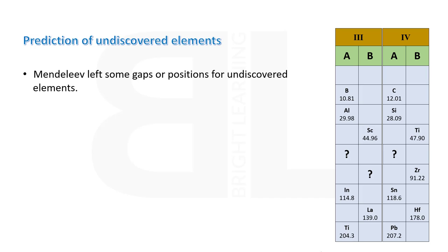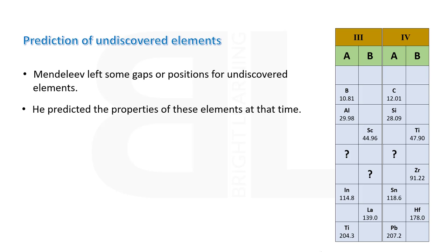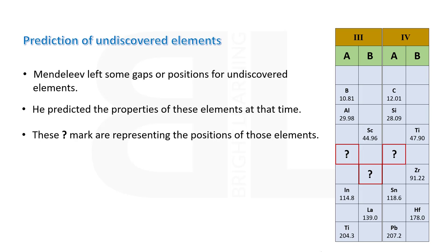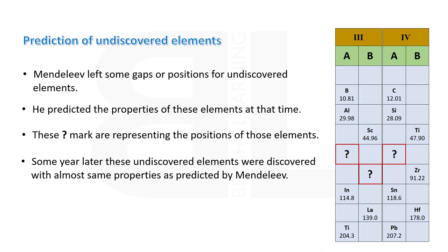Mendeleev left some gaps or positions for undiscovered elements in his periodic table and predicted their properties. These question marks represent the positions of elements which were not yet discovered. Some years later, these undiscovered elements were discovered with almost the same properties as predicted by Mendeleev. This was another great achievement. When gallium was discovered by a French scientist, its properties were almost similar to those predicted by Mendeleev.